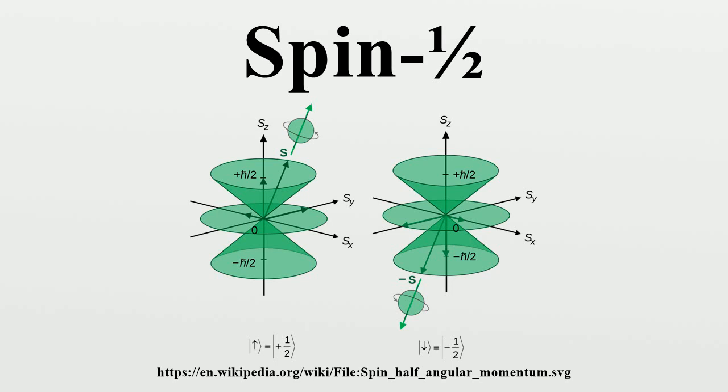In non-relativistic quantum mechanics, the quantum state of a spin-1/2 particle can be described by a two-component complex-valued vector called a spinor. Observable states of the particle are then found by the spin operators Sx, Sy, and Sz, and the total spin operator S.